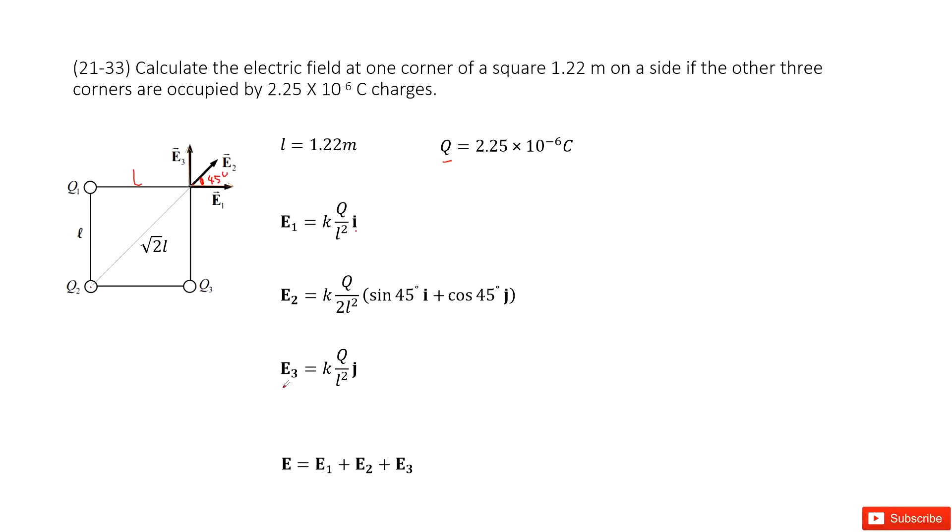The next one is E3. E3 is radially outward, pointing to the positive y-direction. It is kQ, and the distance between Q3 and the location is L, so it is kQ/L² j.